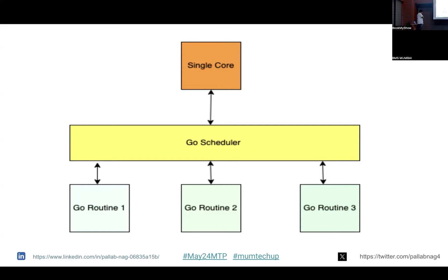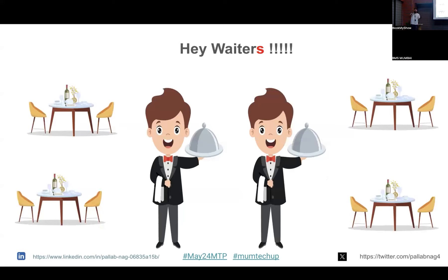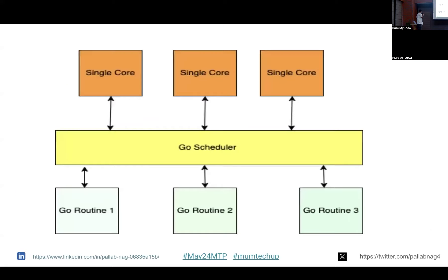Now I've gathered more money and my restaurant is going well, so I've deployed two waiters. Now the scenario becomes very simple — these two waiters can take orders from two tables simultaneously, so neither has to wait. What I've achieved here is parallelism. We replace the single-core machine with multiple cores. With multiple cores, the Go scheduler can actually execute multiple routines at the same time. We have achieved parallelism — we can exactly execute multiple threads and processes at the same time.